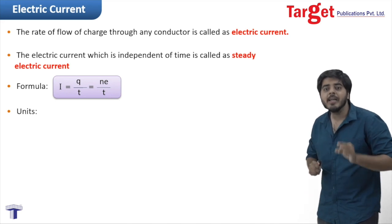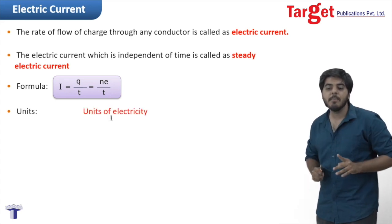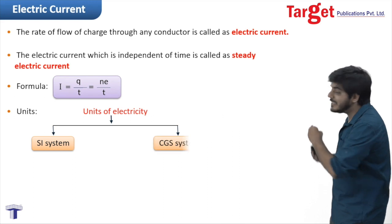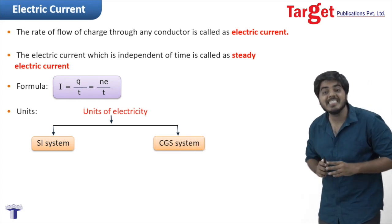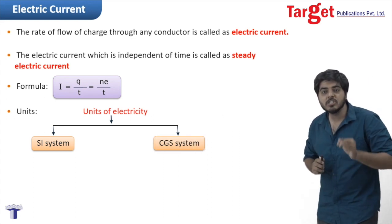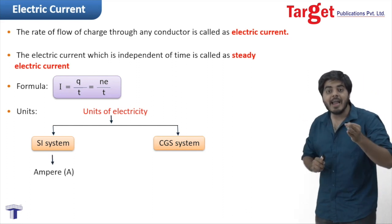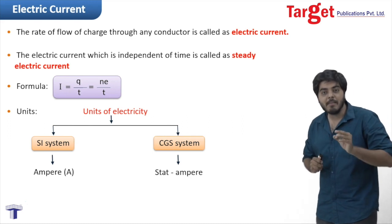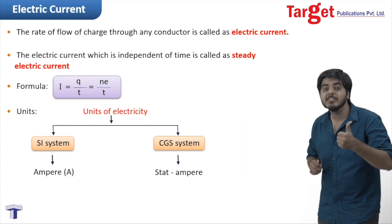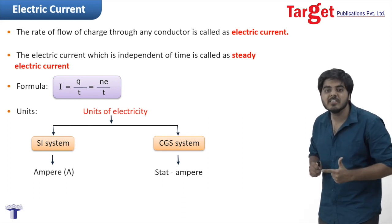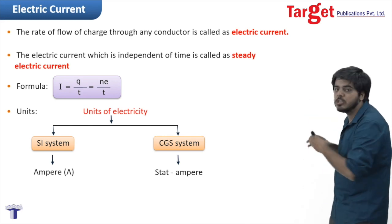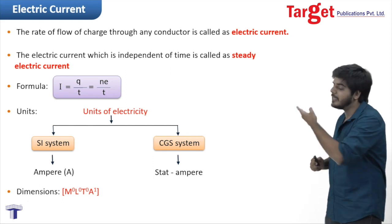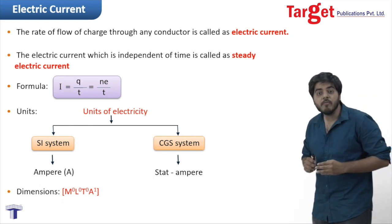Now let us look at the units of current. I will classify two types of units: the first is the SI system and the second is the CGS system. In the SI system, the unit of current is ampere. In the CGS system, the unit of current is stat ampere.